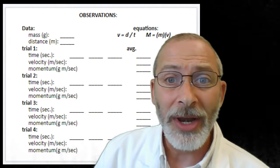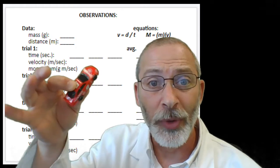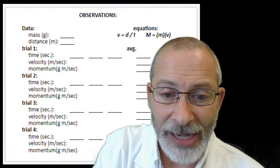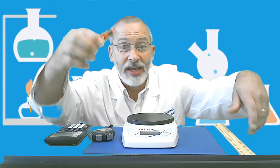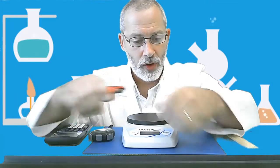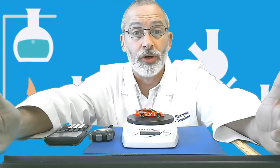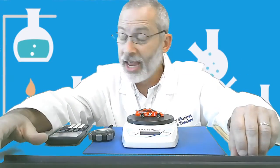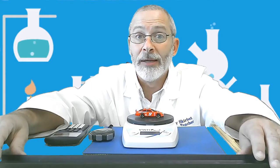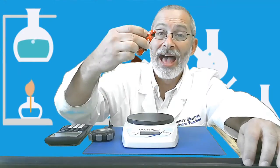Let me explain what we're going to be doing. We have a little vehicle — this is the vehicle we're going to test. We're going to take the mass of this vehicle. I'm going to turn on our digital balance, wait for it to zero out, and determine the mass. The mass of our vehicle is 25 grams. In your data table, write down 25g for grams — that is the mass of our vehicle.